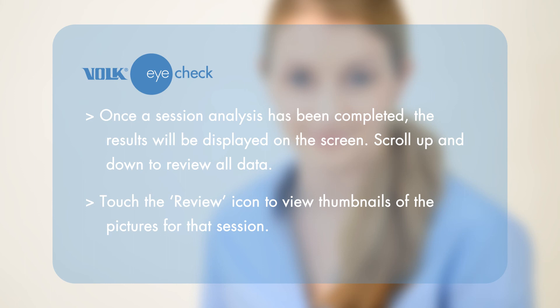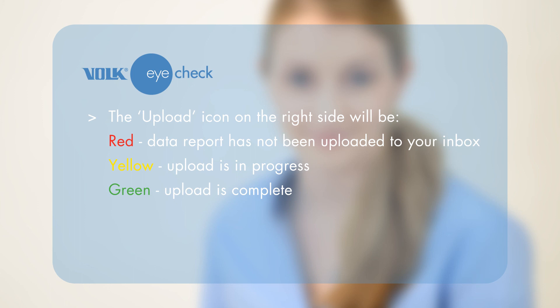Scroll up and down to review all data. Touch the review icon to view thumbnails of the pictures for that session. Touch back to return to the results screen. The upload icon on the right side will be red if the data report has not been uploaded to your inbox, yellow if the upload is in progress, and green if upload is complete.